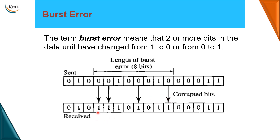Finding out that the data received is not exactly how the data was sent is error detection. And finding the exact positions where the bits have been modified is error correction.